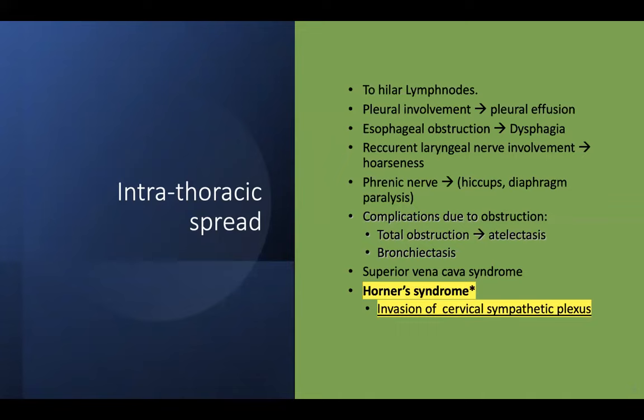If the recurrent laryngeal nerve is involved, it often gives rise to hoarseness. Phrenic nerve involvement can give rise to hiccup, and the most dreaded complication is respiratory paralysis due to diaphragmatic paralysis, which can give rise to respiratory arrest. Complications arising due to obstruction include total obstruction within a large bronchus, which can give rise to atelectasis — known as resorption or absorptive atelectasis — as well as bronchiectasis and dilatation of the upper airways.